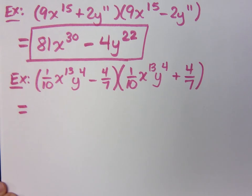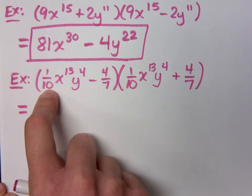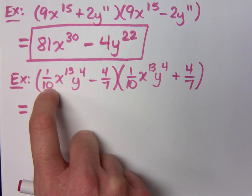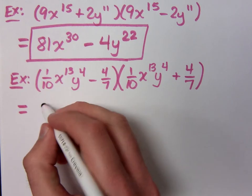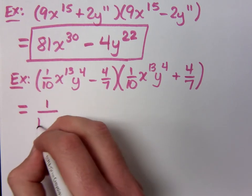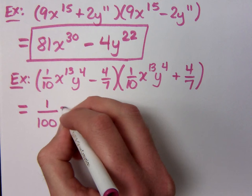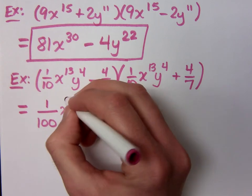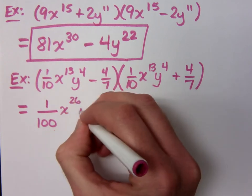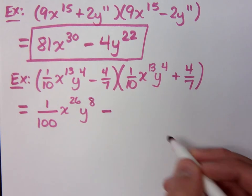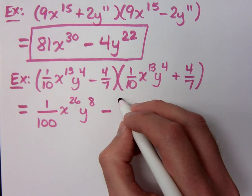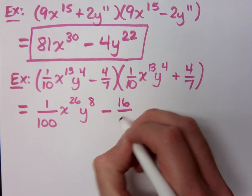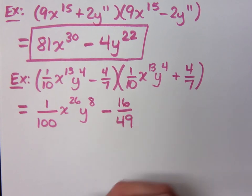So I've got to square this guy. How do I square 1/10th? What's 1 squared? 1. What's 10 squared? 100. What about those variables? x to the 26 and y to the 8. Minus, I've got to square 4 over 7. 16 over 49. I'm squaring 4 and I'm squaring 7.